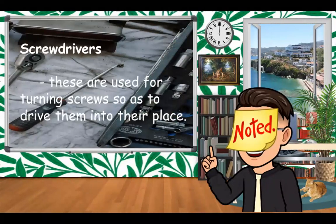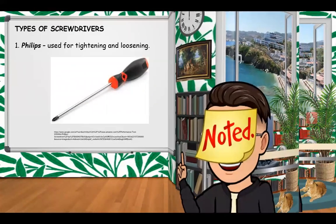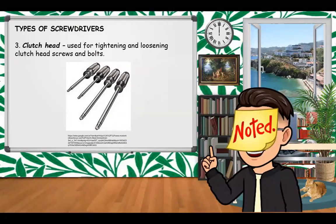Screwdrivers are used for turning screws to drive them into place. Types include: the Phillips screwdriver, used for tightening and loosening Phillips screws; the standard or slotted screwdriver, used for tightening and loosening slotted screws and bolts; and the clutch head screwdriver, used for tightening and loosening clutch head screws and bolts.